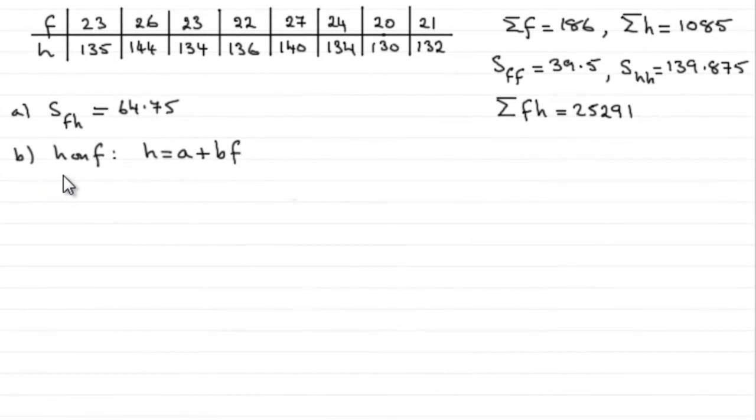Now for part B, we're asked to calculate the equation of the regression line of H on F, and give it in the form H equals A plus BF.